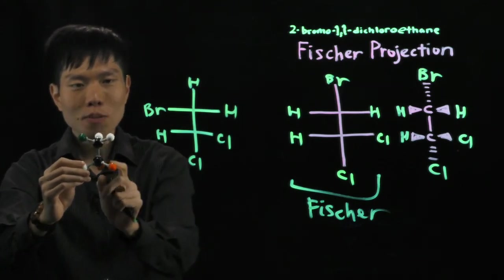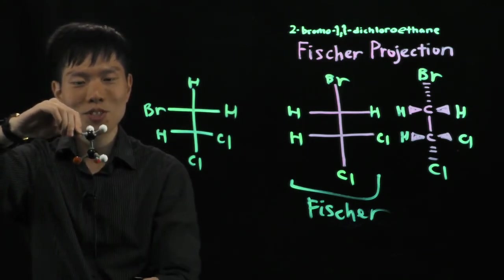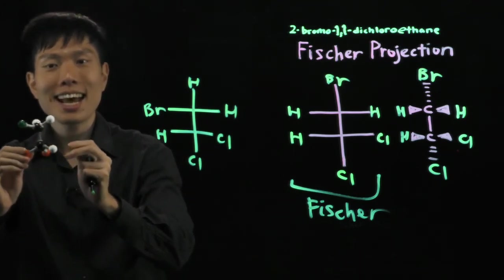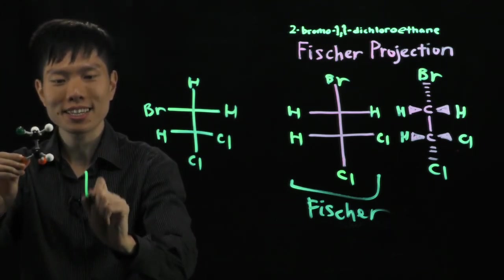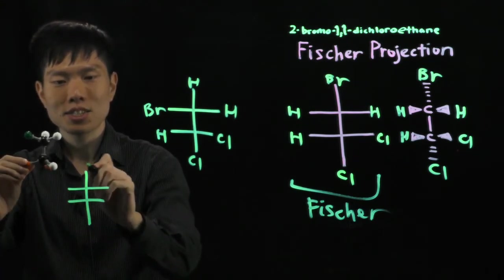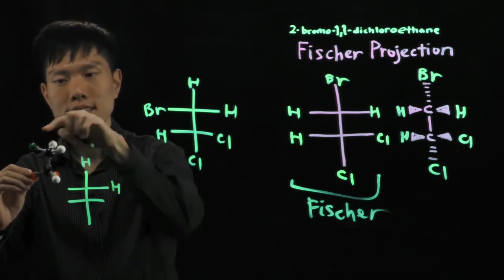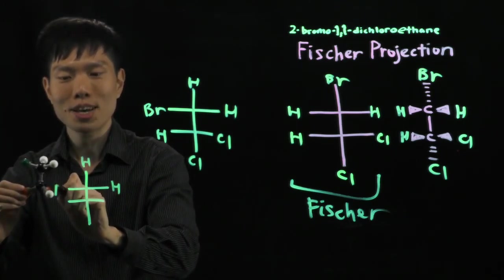If I rotate the bottom part this way. Do you see? What I'm having is another way of drawing it. Right here. Again, draw the skeleton first. Carbon, carbon. So, H. H. Side. You have Br.